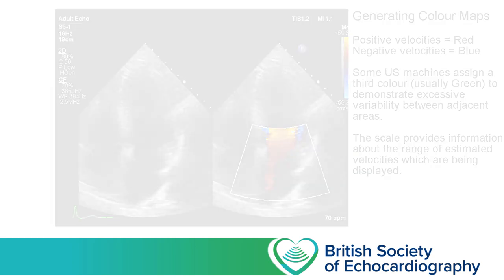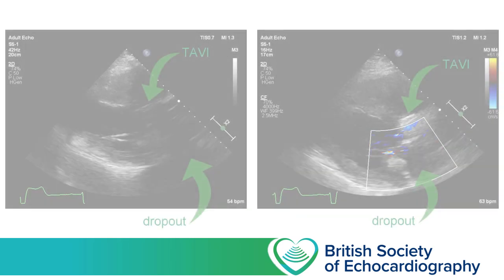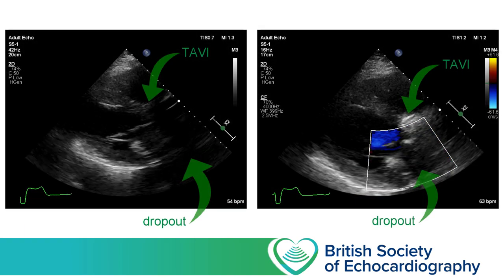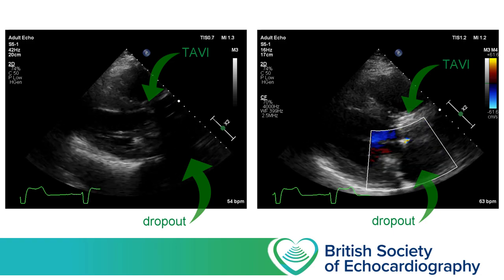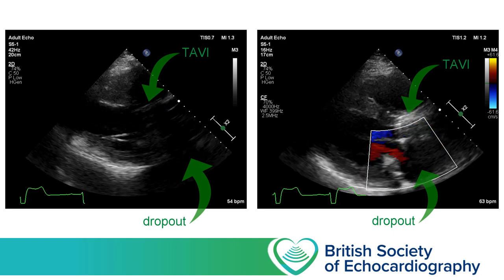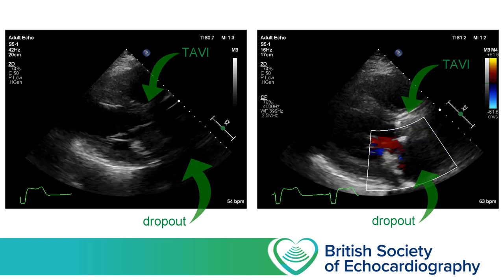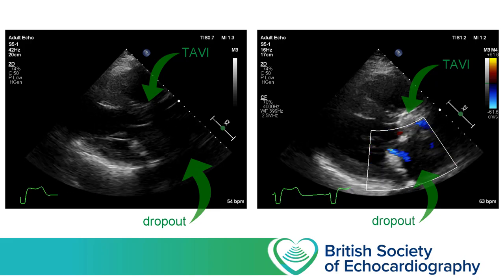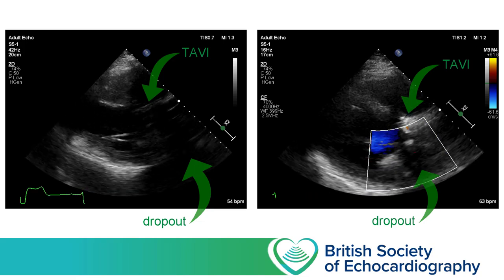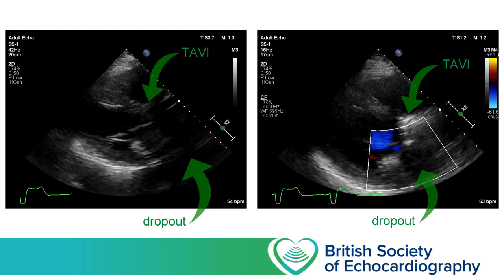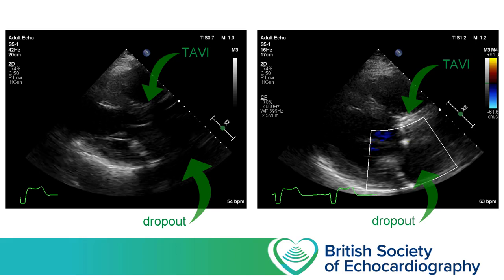Now that we have a basic understanding of how colour Doppler is generated, we can consider some of its limitations. First of all, all of the data the ultrasound software uses to generate your colour map comes from the returning ultrasound signal. So any factors that diminish the quality of your two-dimensional ultrasound image — such as body habitus, patient position, and dropout caused by acoustic shadowing — are all going to impair the quality of data the software gets back and impair its ability to produce a colour map.